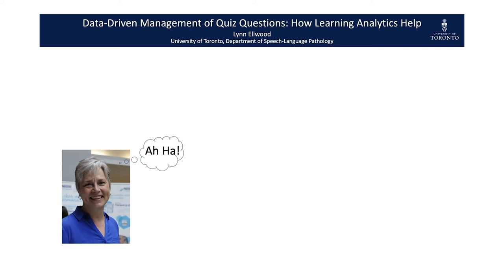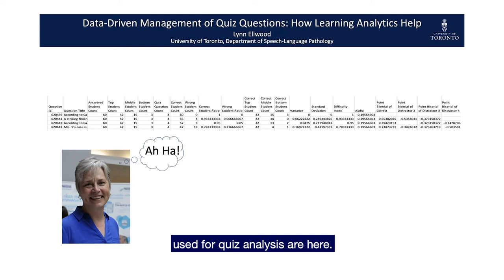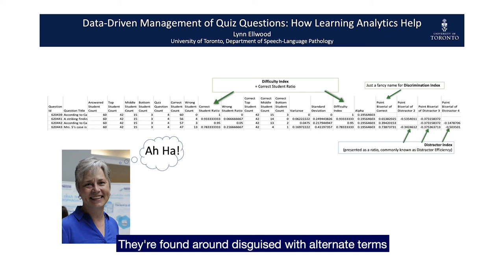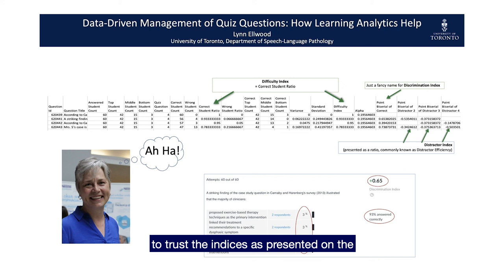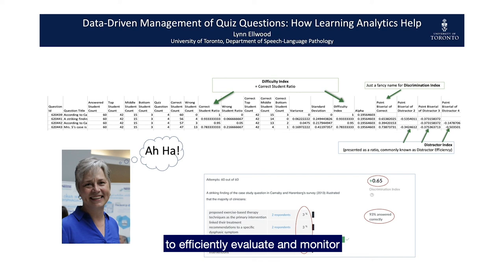The three main indices commonly used for quiz analysis are here. They're found disguised with alternate terms and using ratios instead of percentages, like on the dashboard. I basically abandoned the report and quickly learned to trust the indices as presented on the dashboard to see whether any questions needed to be eliminated or revised. I'm pleased that now I have a means to efficiently evaluate and monitor quiz quality on an annual basis.